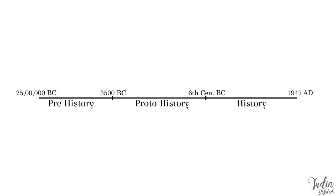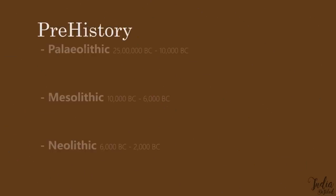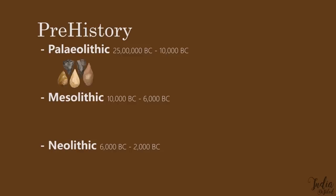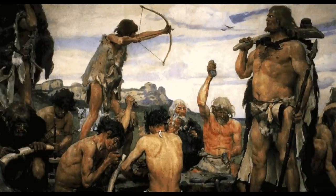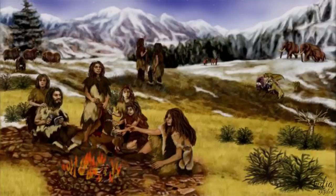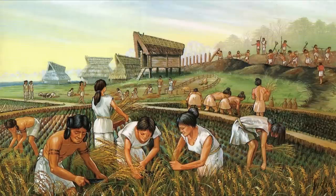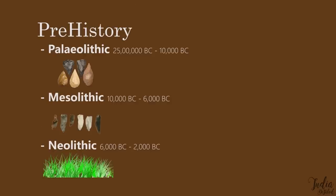These periods are further classified in order to study them more efficiently. The prehistoric period is divided based on the development of the tools of that period. First, the Paleolithic age, when man used tools. Second, the Mesolithic age, when man used microliths — so man was a hunting, gathering nomad. Then he learned farming and settled down, which brought on the Neolithic age.